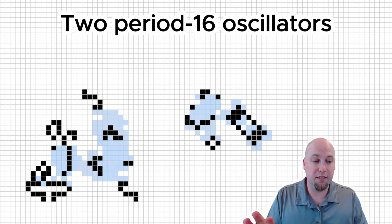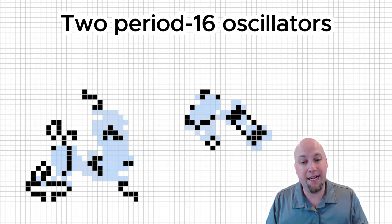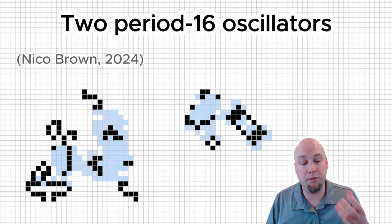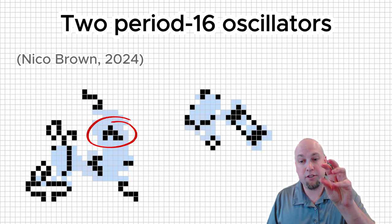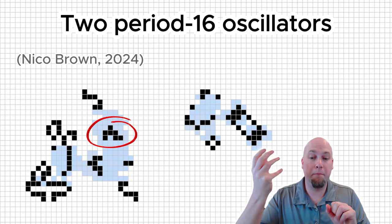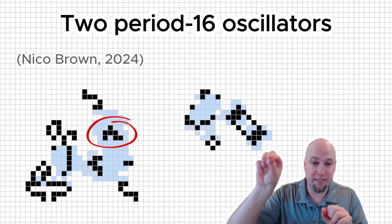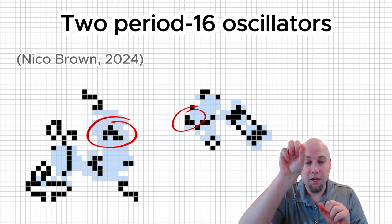The first combination that works, that was discovered, was period 16. There's a known period 16 B-heptomino Hassler that was found by Nico Brown in January 2024, and that can supply the B-heptomino to this reaction.